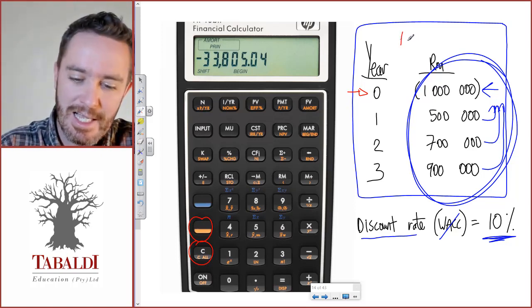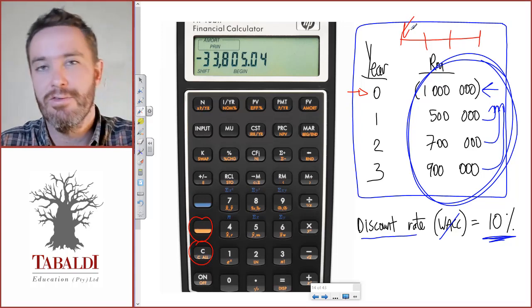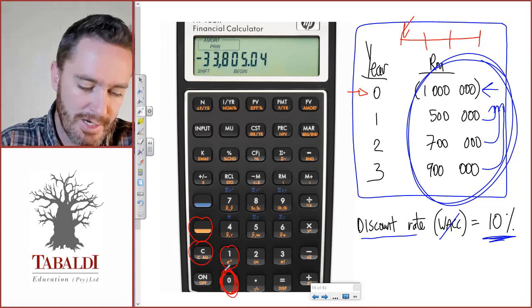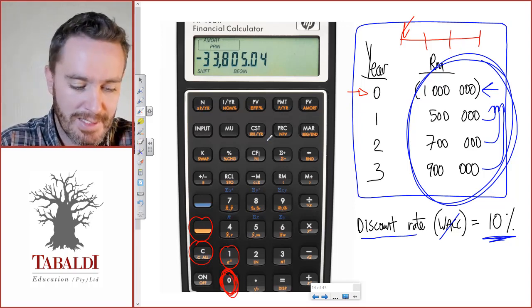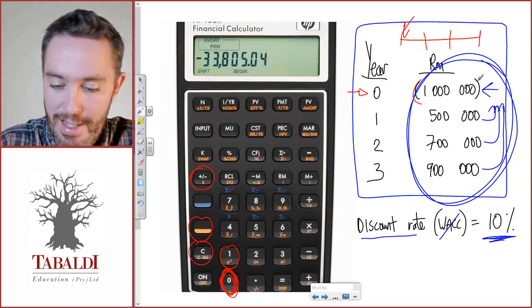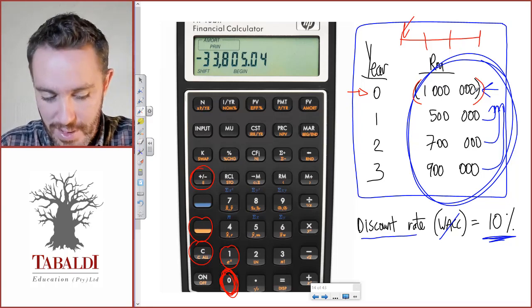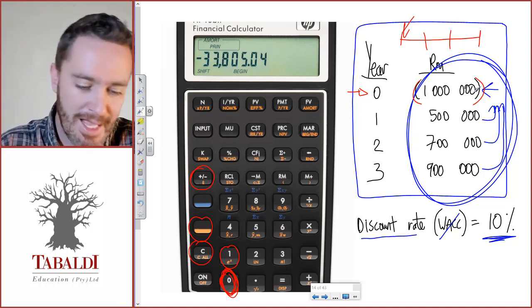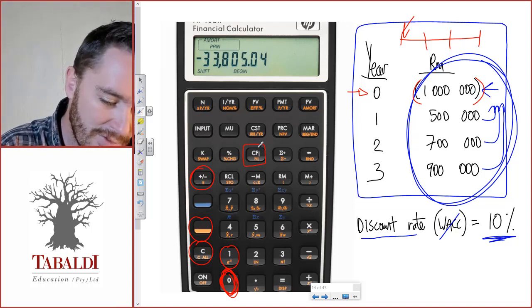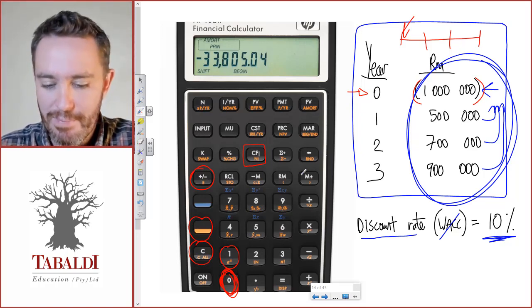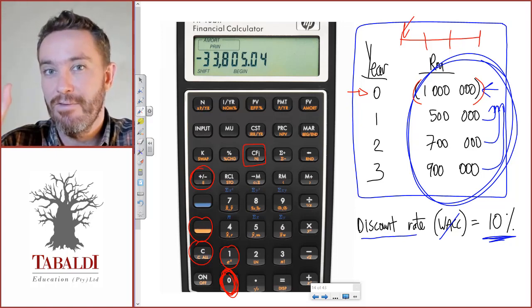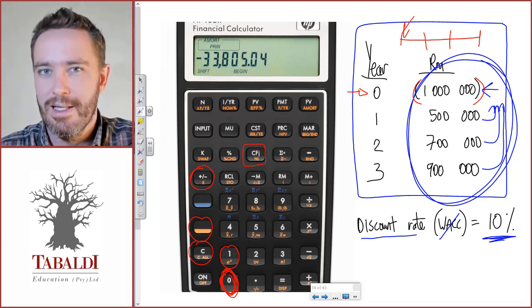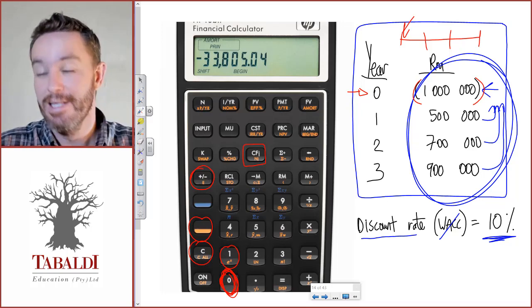We will type in one triple zero triple zero—one million—and press this button to convert it to a negative, since it's an outflow. This will show negative one million on your screen. Then press the CFJ button, the cash flow button, which will input negative one million as our first cash flow. It will show one CF or zero CF for year zero cash flows input.